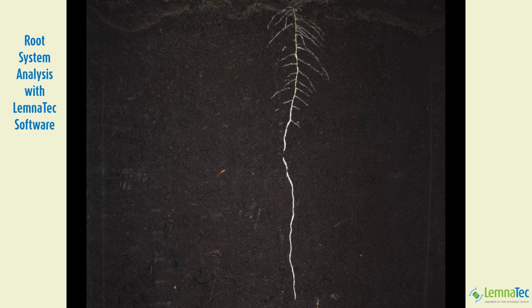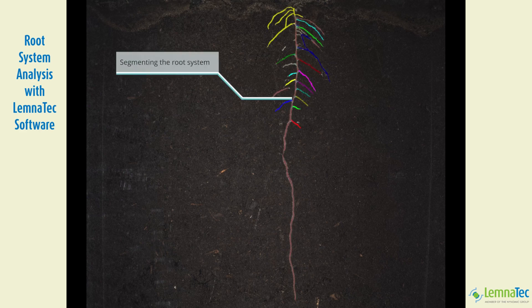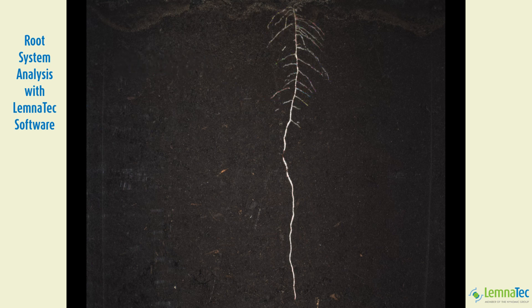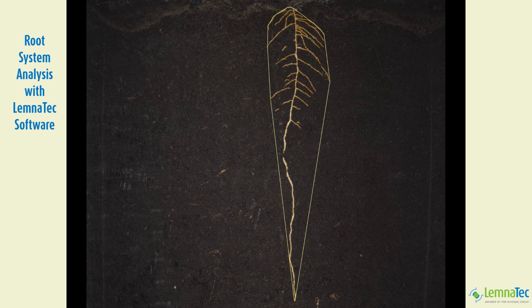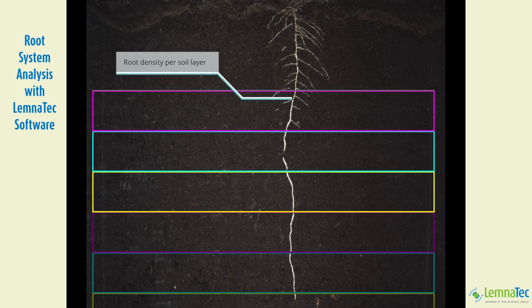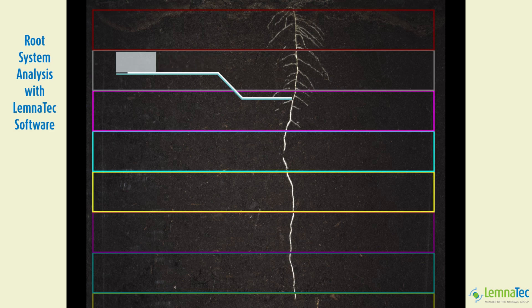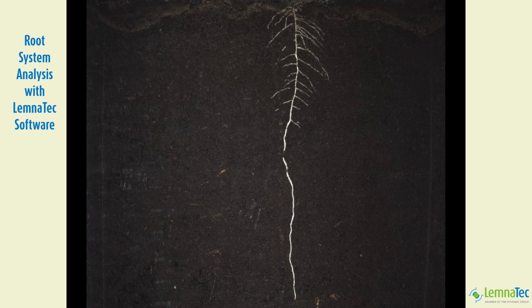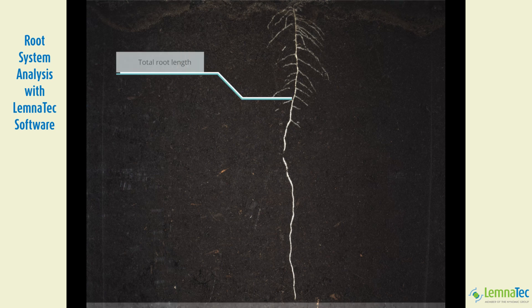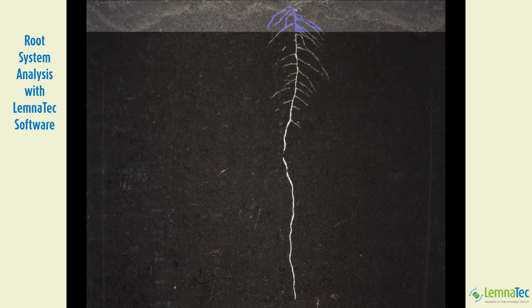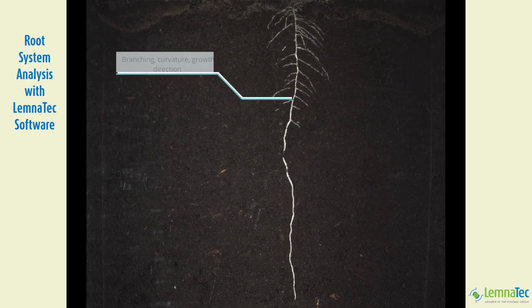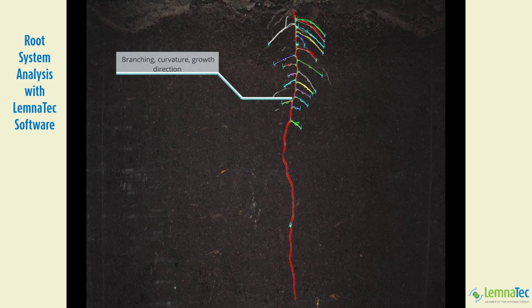What happens in root analysis with Lemnatech software? The root system is segmented and the morphology of the root system is analyzed. The density of roots in different soil layers is determined, the length of the root is measured, and branching angles, curvature, and growth direction are determined.